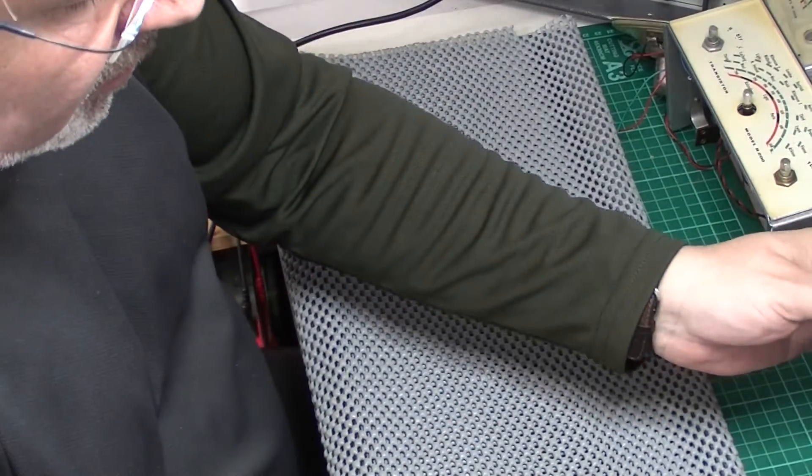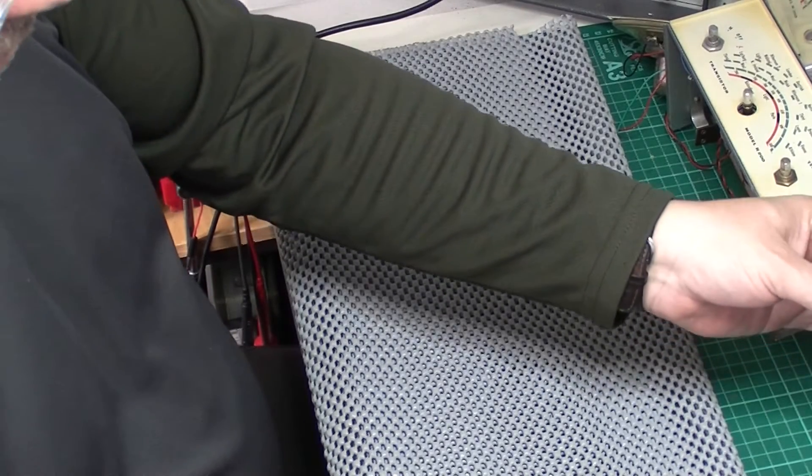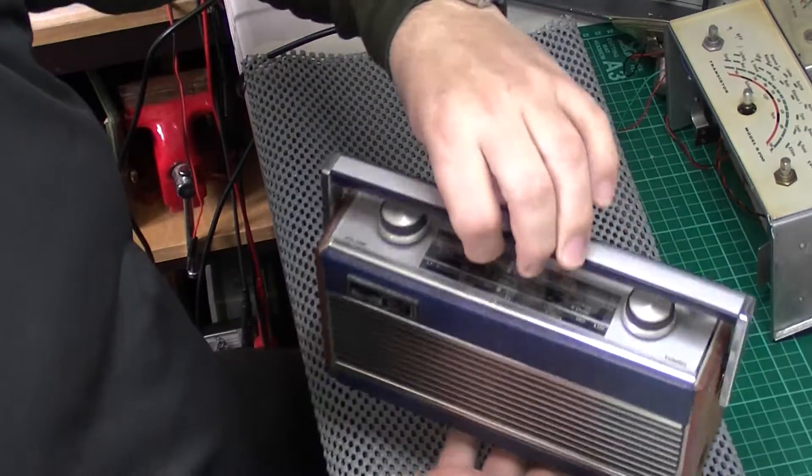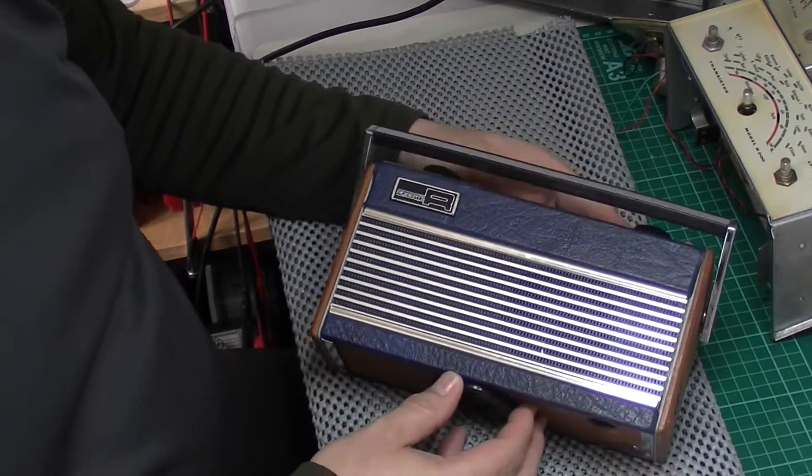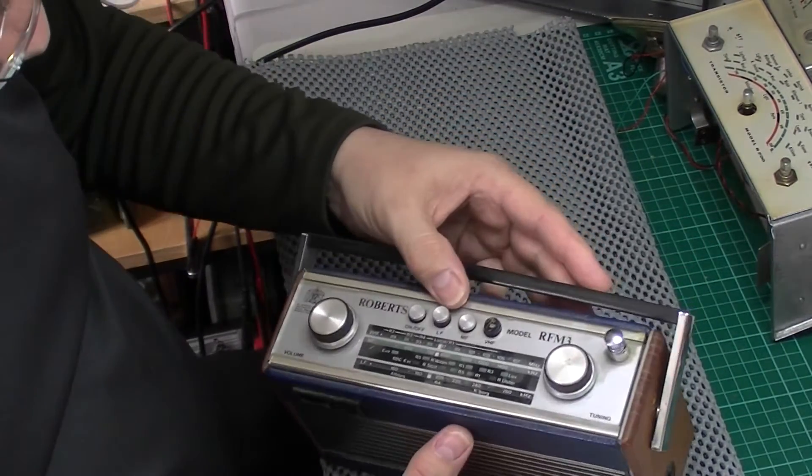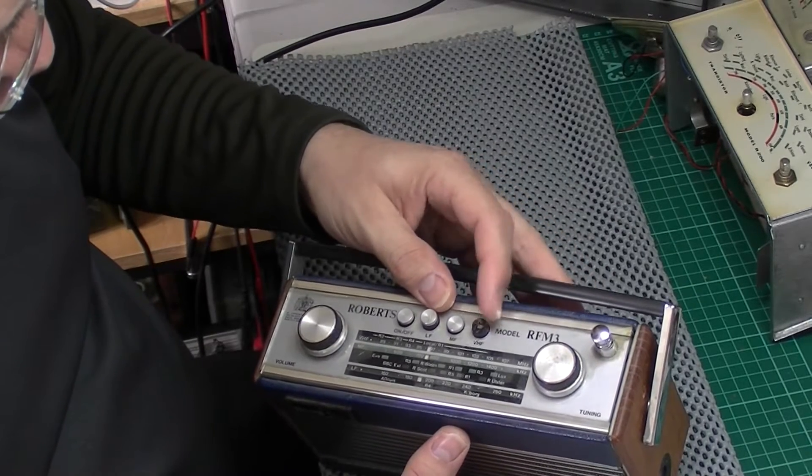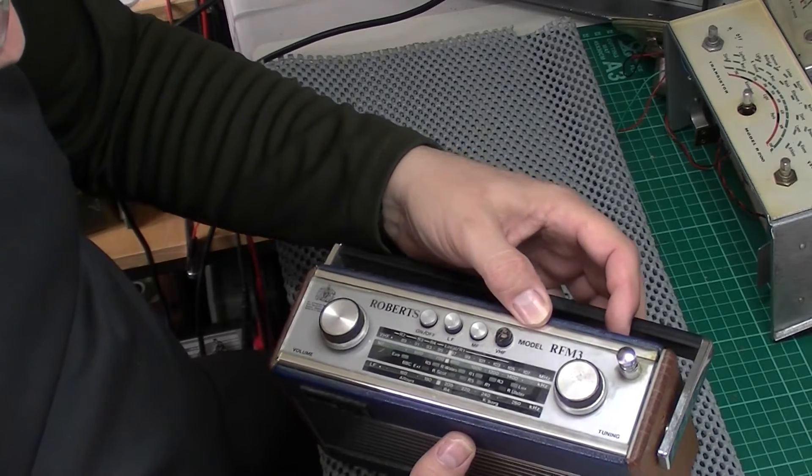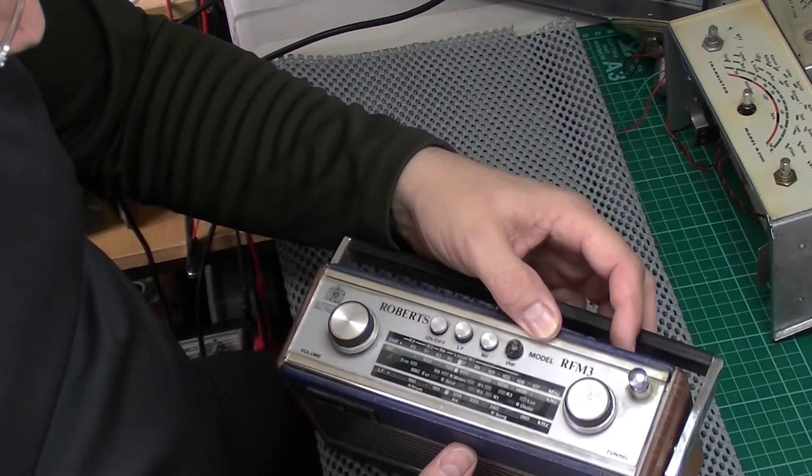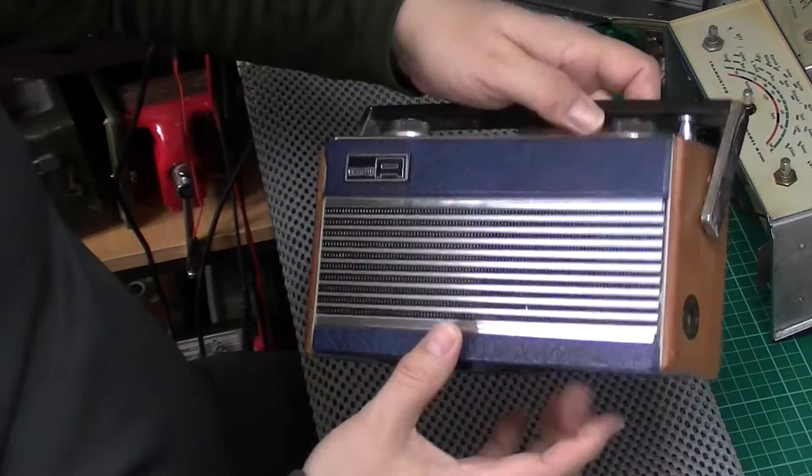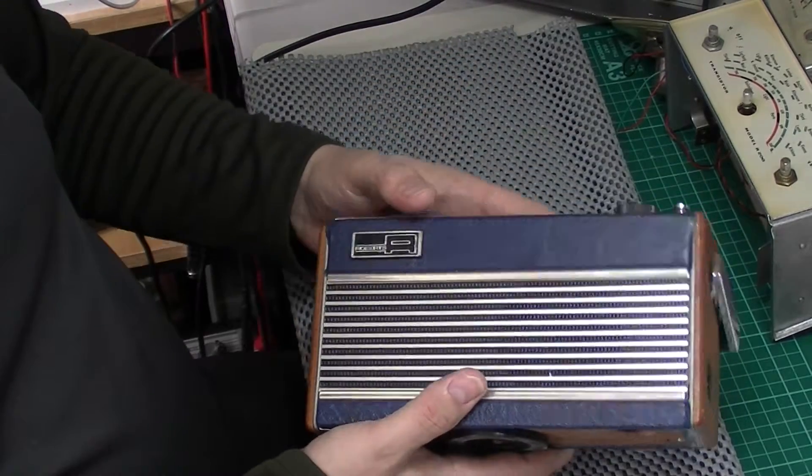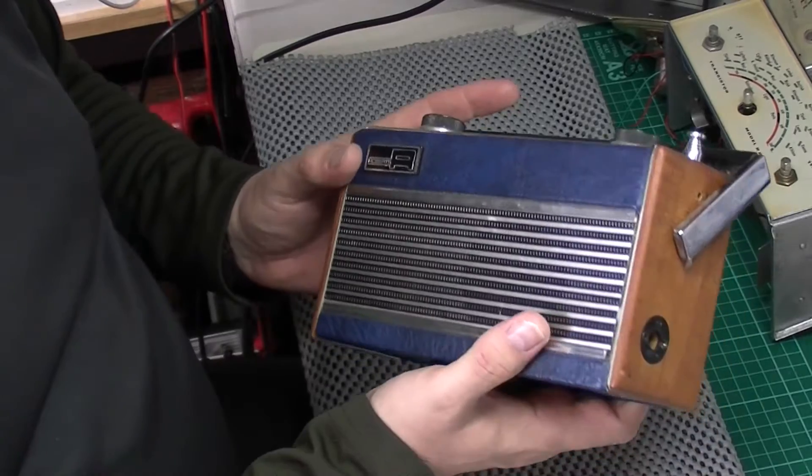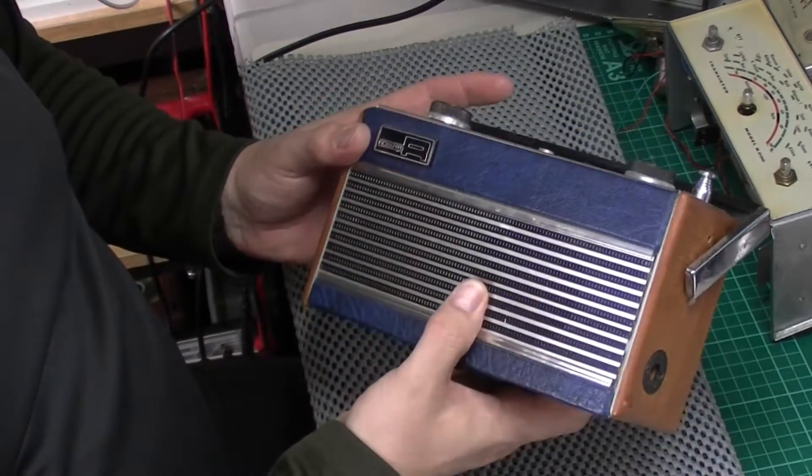Off out later but thought I'd show you something that arrived the other day, pretty ropey. And it's this, the little Roberts again, one of their newer models, not the newest but probably from the 80s, the RFM3. It's a lovely little size really, not a pocket radio but it certainly sits on a bedside table very nicely.